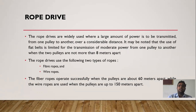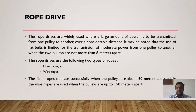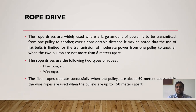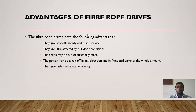Rope drive is used in two categories: first is fiber ropes, and second is wire ropes. Fiber ropes are made from fibers, while wire ropes are made from metal wires. Fiber ropes are generally used for distances up to 60 meters apart, and wire ropes are used for distances up to 150 meters apart. This is the main advantage of rope drive over flat belt drive, which is limited to only eight meters.